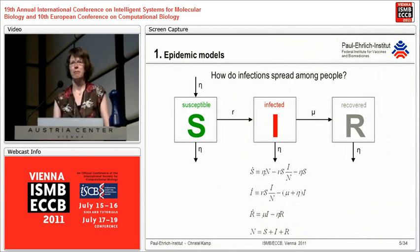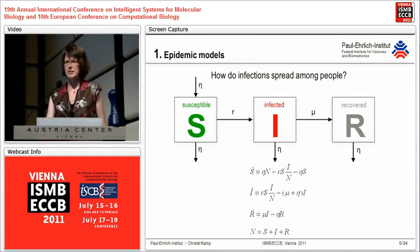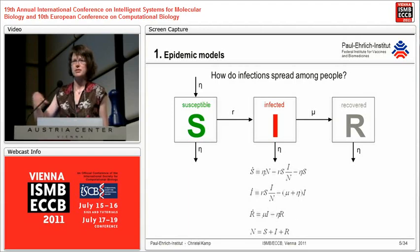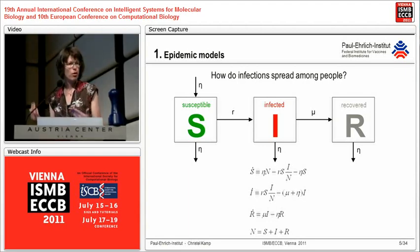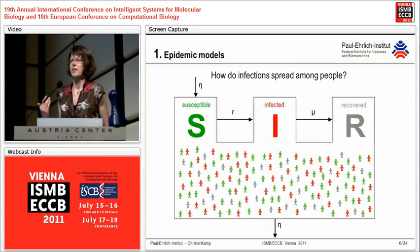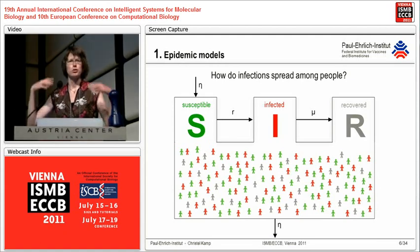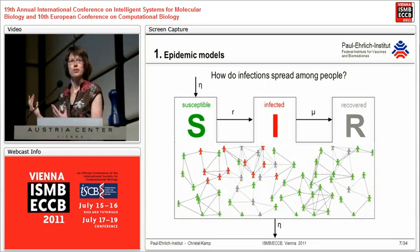The most classical epidemic model is probably the SIR model. It's pretty simple — you just subdivide your population into three groups depending on whether individuals are still susceptible and healthy, whether they have already been infected, or whether they have recovered from the infection and acquired immunity. You can write down a set of differential equations which is pretty straightforward and easy to solve. The only problem is that the assumptions are not very realistic, because you assume a highly homogeneous population where everybody interacts with everybody else.